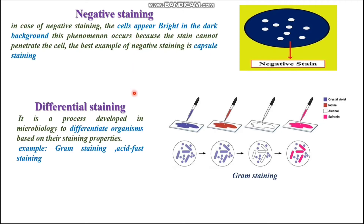Next, we have to discuss differential staining. It is a process developed in microbiology to differentiate organisms based on their staining properties. Examples are gram staining and acid fast staining. Here we are going to discuss gram staining.